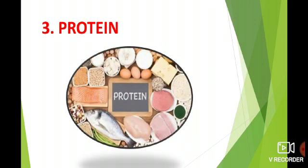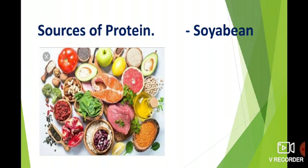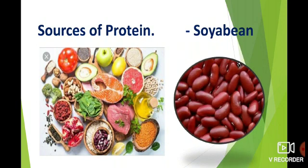We learn about the 3rd food component: protein. Proteins are otherwise called body-building food. Proteins are necessary for growth and cell repair. Proteins are macronutrients and during digestion they break down into micronutrients such as amino acids. The main sources of proteins are pulses, egg, milk, fish, nuts, and grams. A very rich source of protein is soya beans.